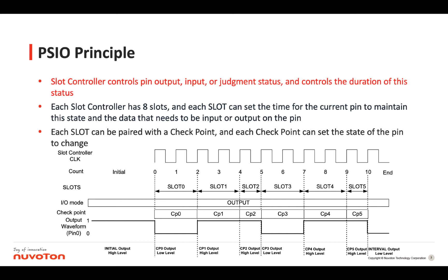The principle of PSI-O is to use a slot controller to control the pin input and output of a determinate state. It can also control the duration of these states. Each slot controller has 8 slots, which can be used as 8 settings, and the registers corresponding to each slot can access the data that needs to be input and output, and can also set the time for the current pin to maintain this state.